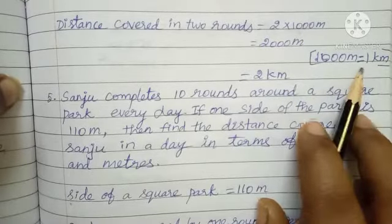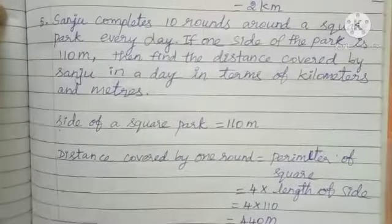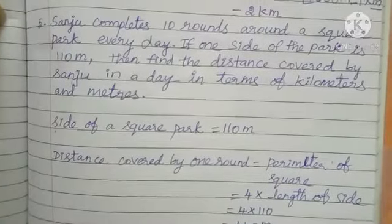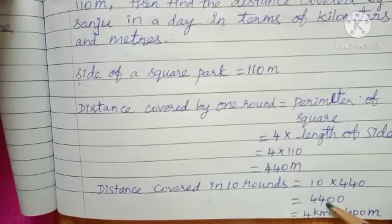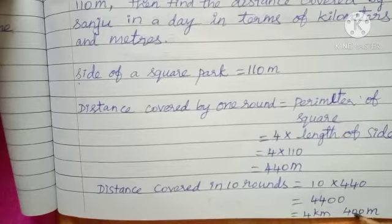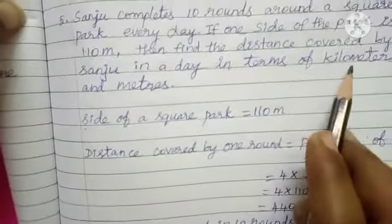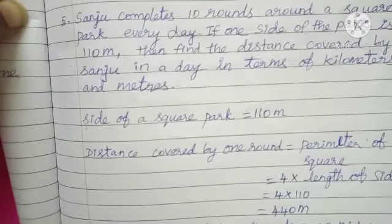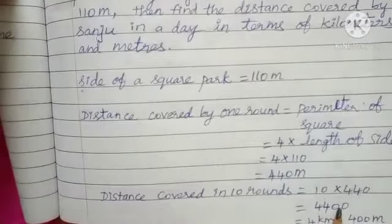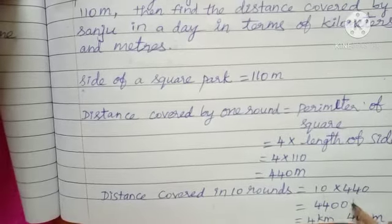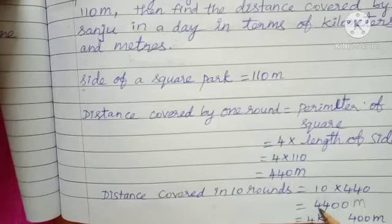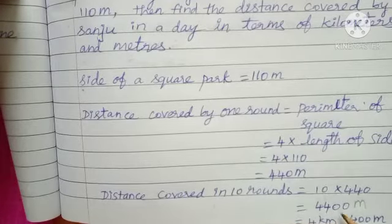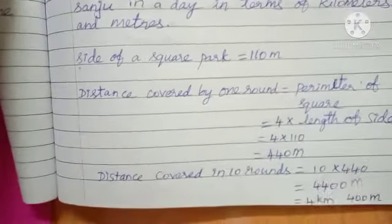Now, 1000 meter equals 1 kilometer. So from 4400 meter: 4000 meter is 4 kilometer, and 400 meter remains. The answer is asked in kilometer and meter, so 4400 meter equals 4 kilometer and 400 meter. This is the answer.